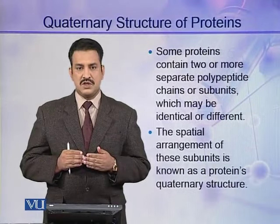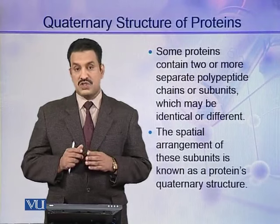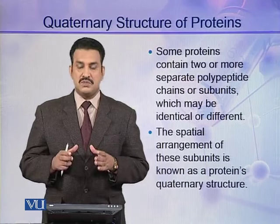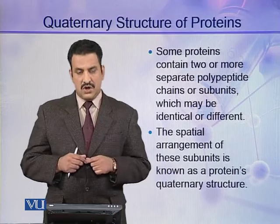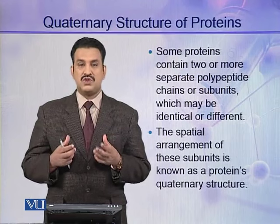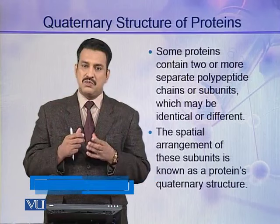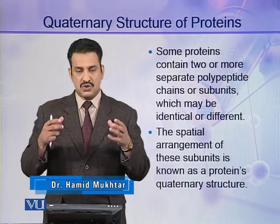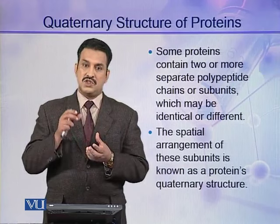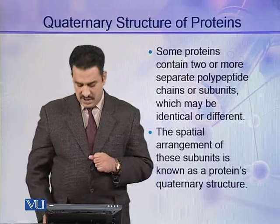Some bigger proteins may not only consist of a single polypeptide chain. They may contain two or more separate polypeptide chains, also called subunits. These subunits may be similar, identical, or different. The special arrangement of these subunits is known as the protein's quaternary structure — the arrangement of multiple polypeptide chains that together make up a single protein molecule.